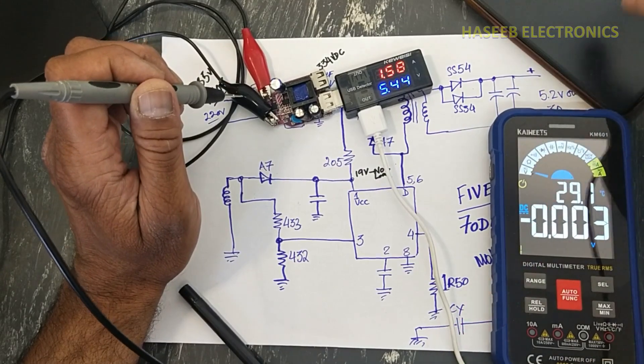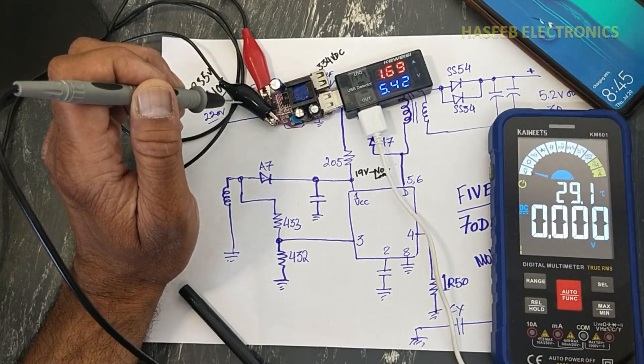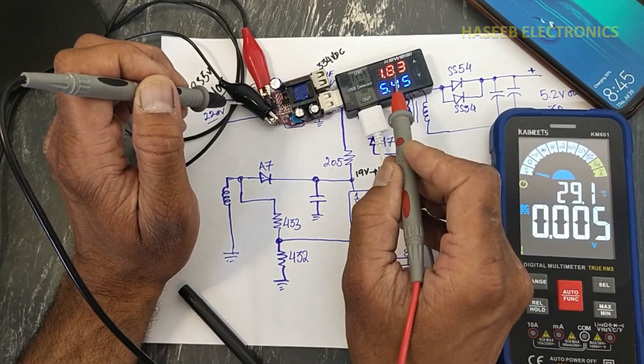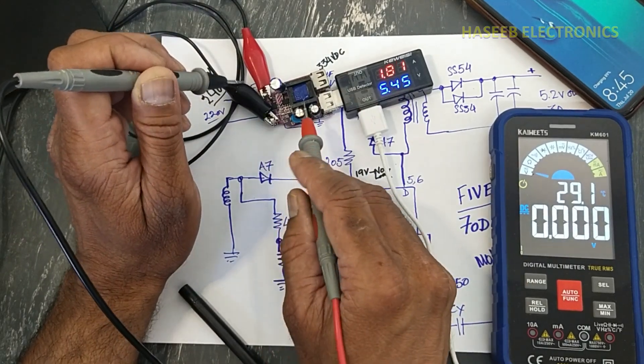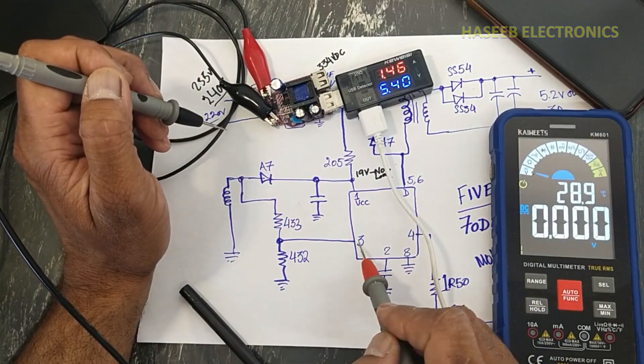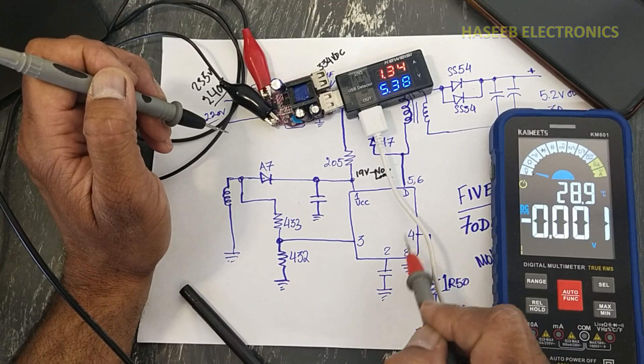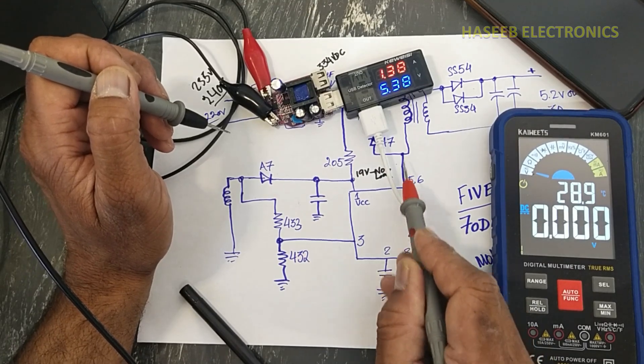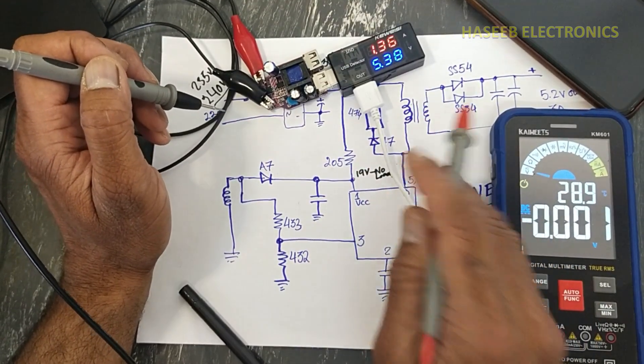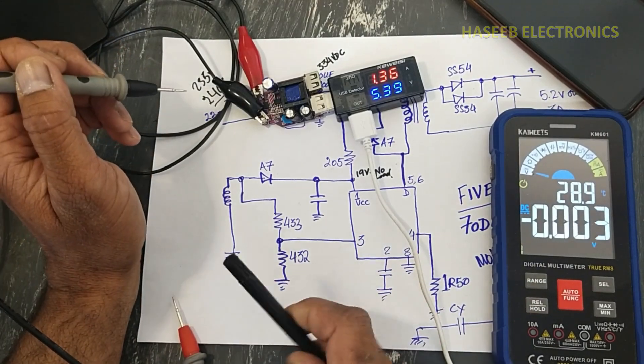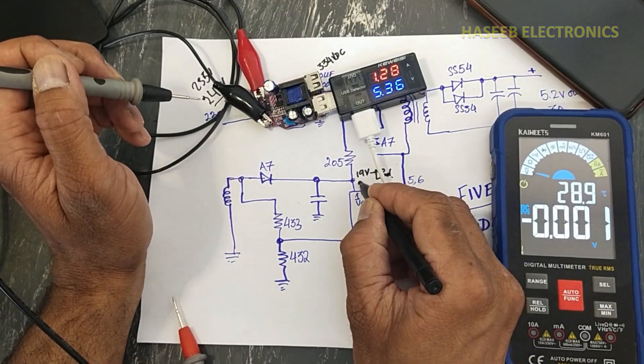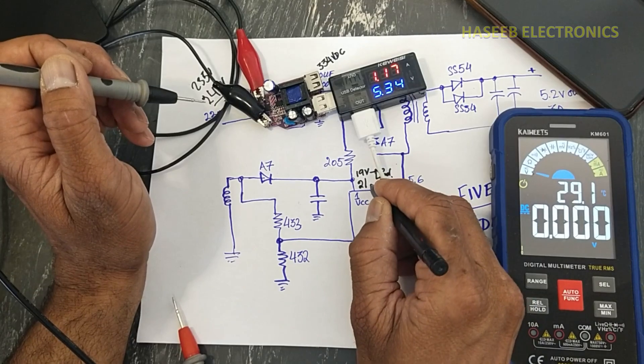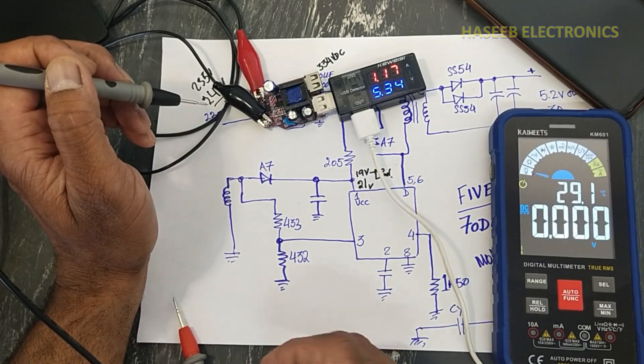How much current will draw here in the mobile, the amount of current will cause to drop the voltage. When the voltage will drop at pin number three, it will change its duty cycle to increase the voltage in the primary. So 21 volt VCC pin is changing at 21 volts with 1.5 ampere load.